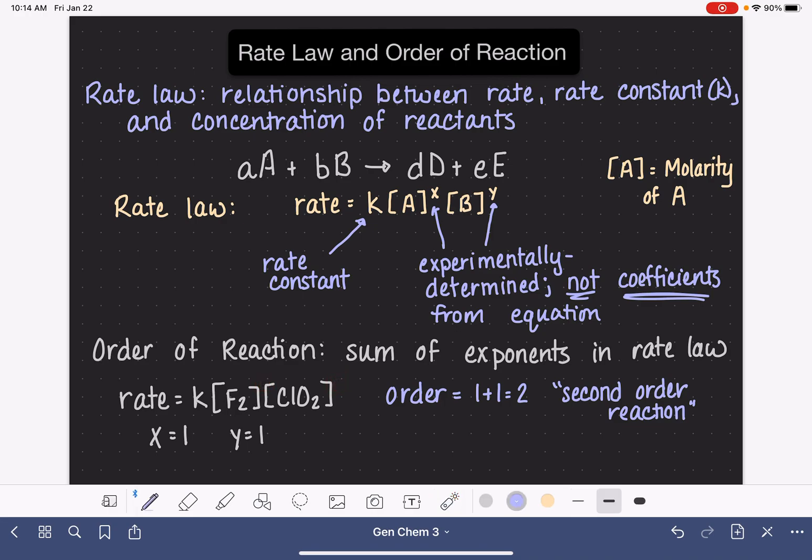Another notation that we use is that we can describe the order of reaction specific to each one of the reactants. So we could say that this overall is a second-order reaction, and we could also say that it is first-order with respect to F2, and it's also first-order with respect to ClO2. So that's referring to the individual exponents for F2 and the individual exponent for ClO2.